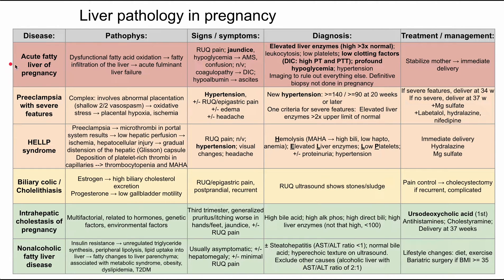Let's start with acute fatty liver of pregnancy. The pathophysiology here is dysfunctional fatty acid oxidation, which leads to fatty infiltration of the liver in an acute fashion. This leads to an acute fulminant liver failure.